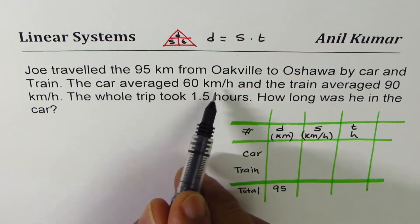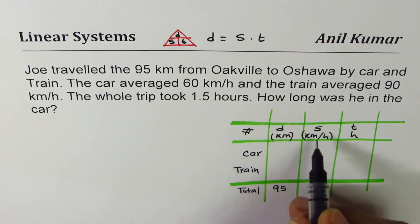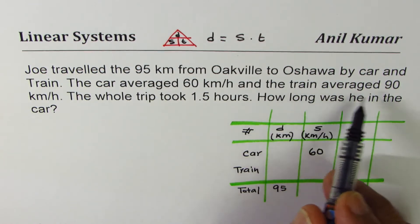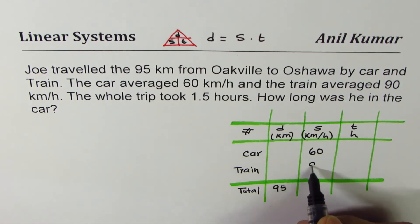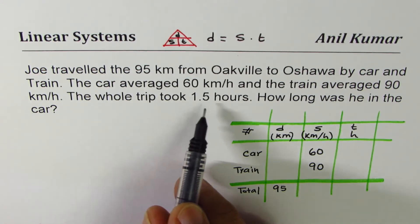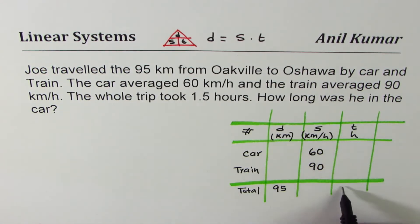The car averaged 60 kilometers per hour. So for car speed is 60 kilometers per hour and the train averaged 90 kilometers per hour. That's the speed. The whole trip took 1.5 hours. So total for time is 1.5 hours.